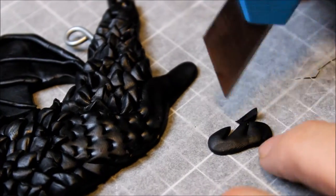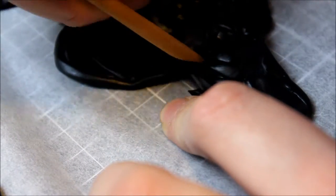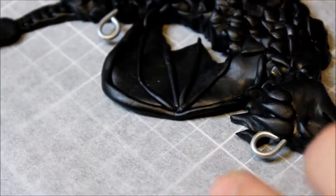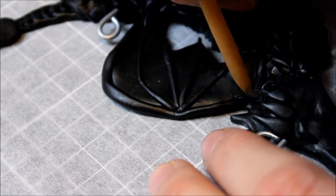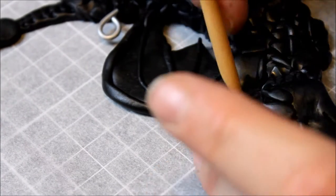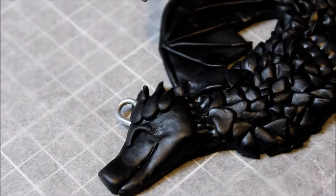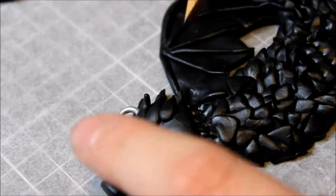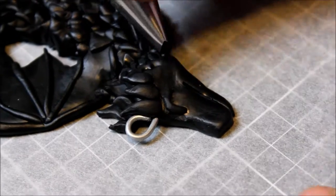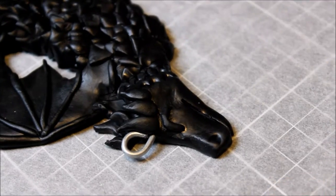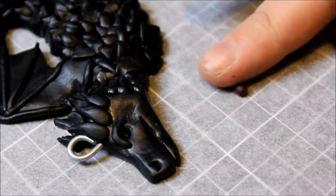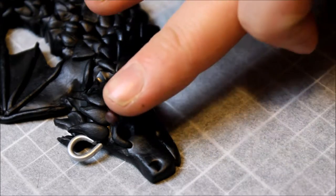I added some spiky bits on the top of his head by cutting out three little spikes and attaching that, then added a few more horns by rolling out little teardrop shaped clay. Add a little nostril and then add your eye, just rolling out a small ball of brown clay and popping that into the eye.